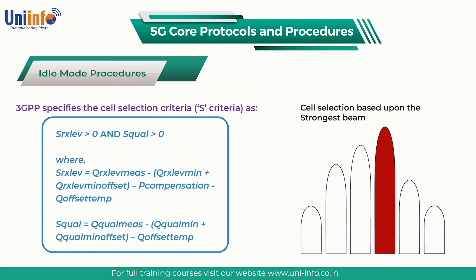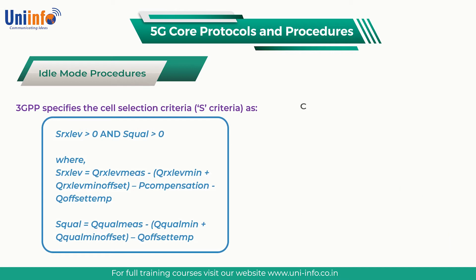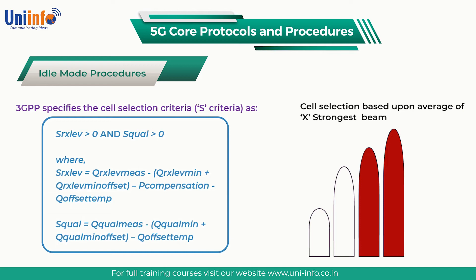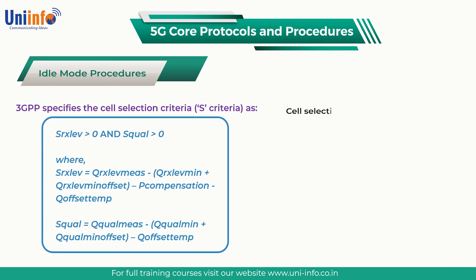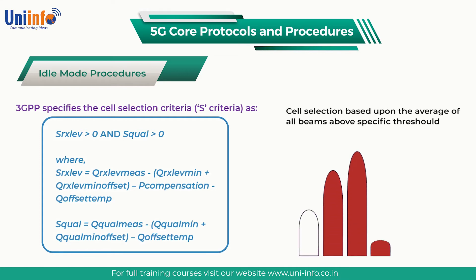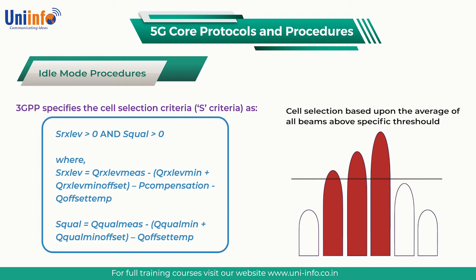The first example assumes that the cell level measurement is based upon only the strongest beam — in that case, cell selection is effectively completed using beam level measurements rather than cell level measurements. The second example assumes that the cell level measurement is derived from the X strongest beam level measurements, whereas the third example assumes it is derived from all beams which exceed a specific threshold.